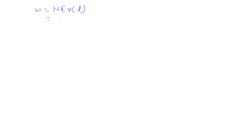We put these values into the formula W = N*E*V: N is 0.1, E is 63, and volume is 0.250 liters. W = 1.575 grams. This is our answer.